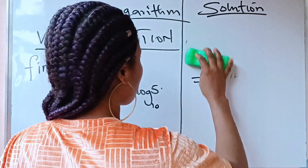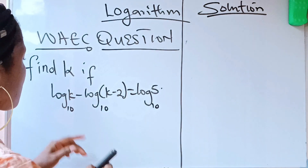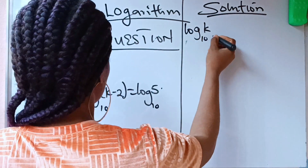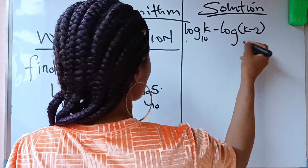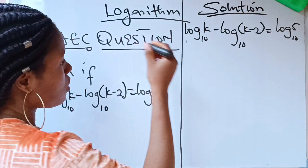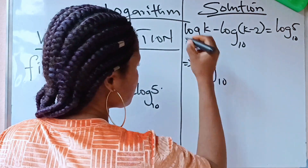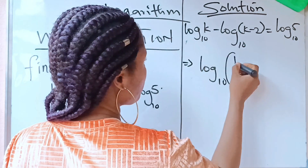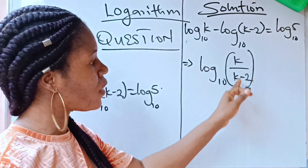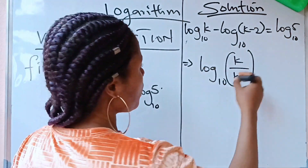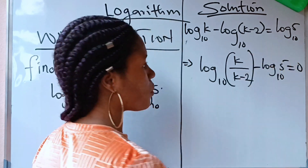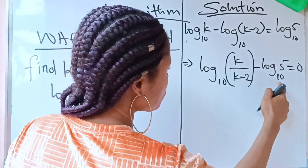So I'm going to use this law to solve this question. We have log k base 10 minus log(k minus 2) base 10 equals log 5 base 10. This implies we take one log to base 10 with k over (k minus 2), and bringing the right side over, it becomes minus log base 10 of 5 equals zero.